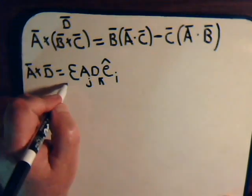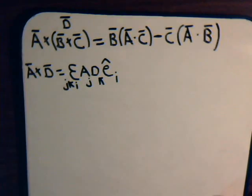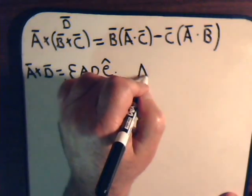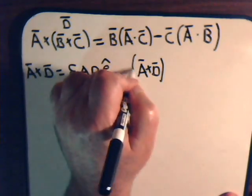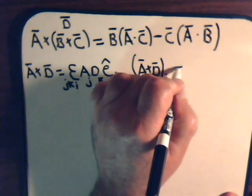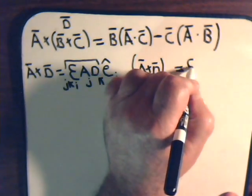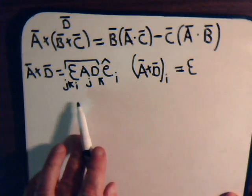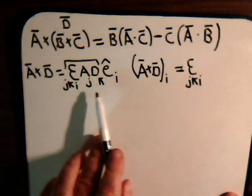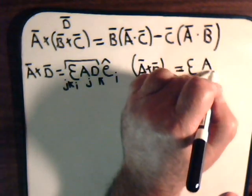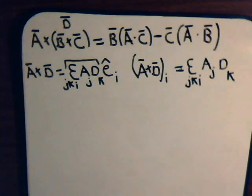And that will equal epsilon_IJK A_J D_K times some unit vector. And we have no preferences to what label we use, so we just call it I. Then, this can be J, and that is K. We know from our previous videos that A cross D, its Ith component, is just this part of the expression. Epsilon_IJK A_J D_K.